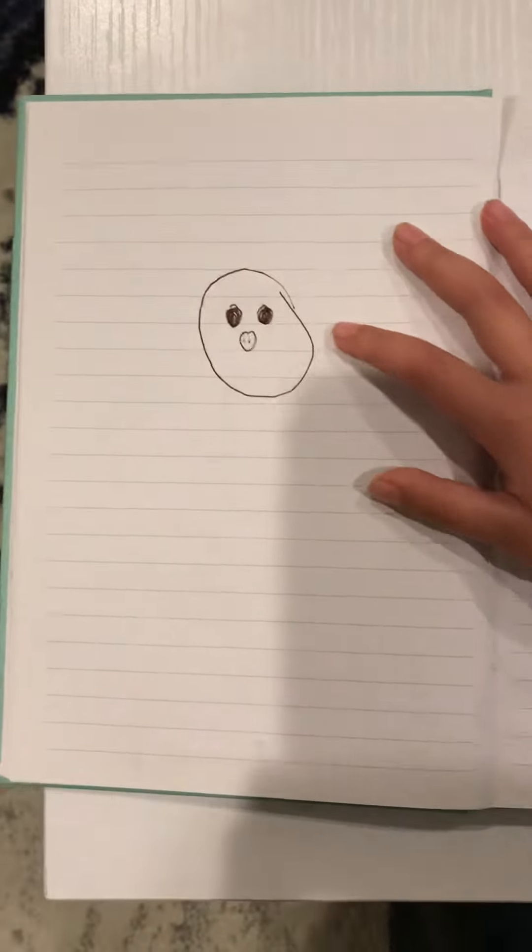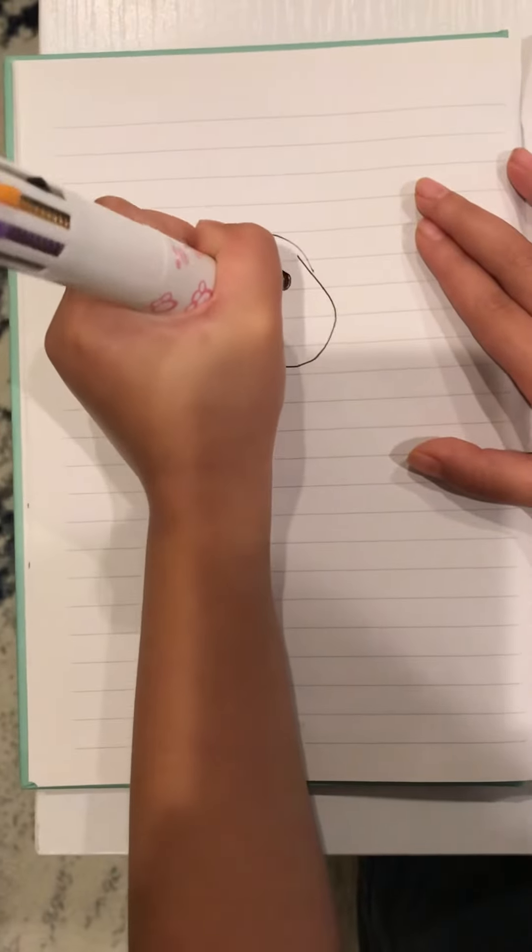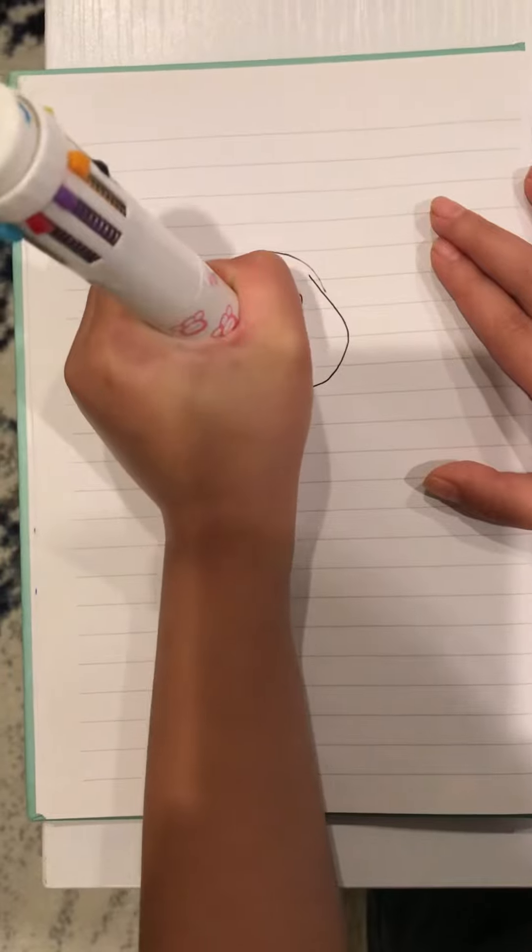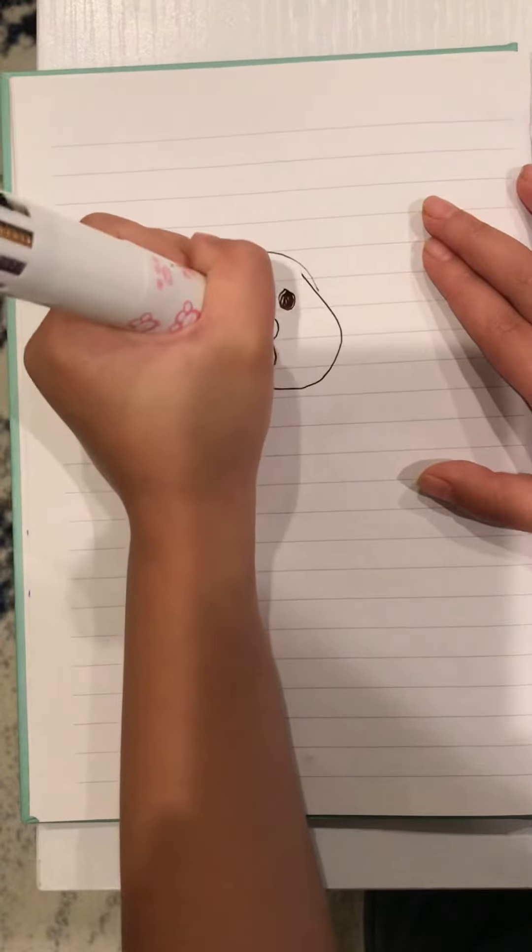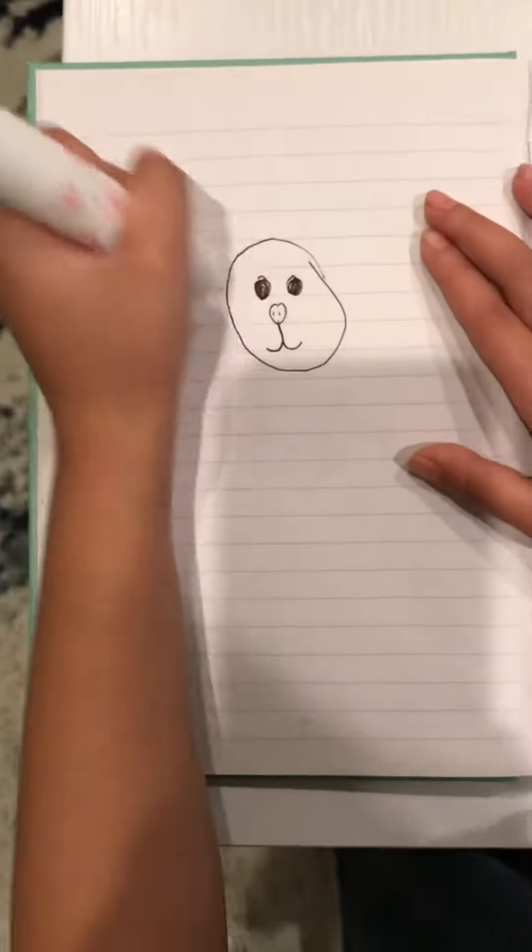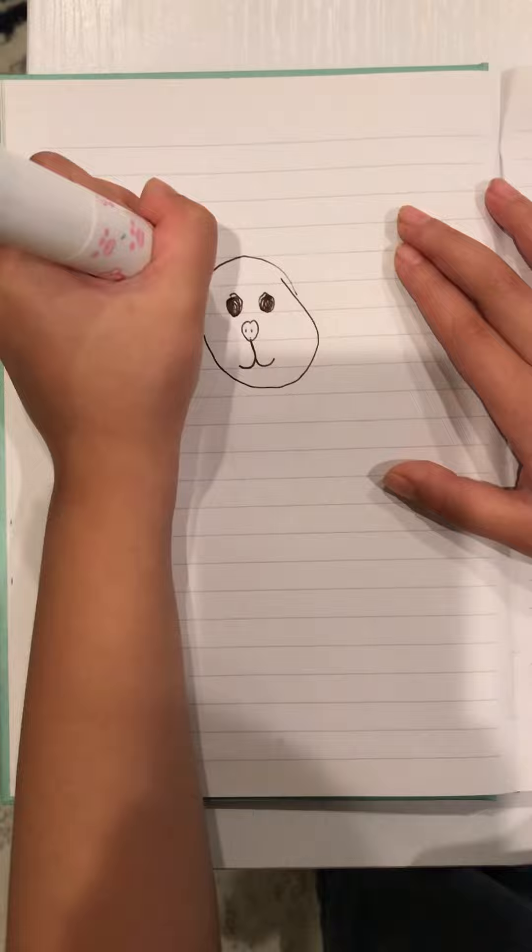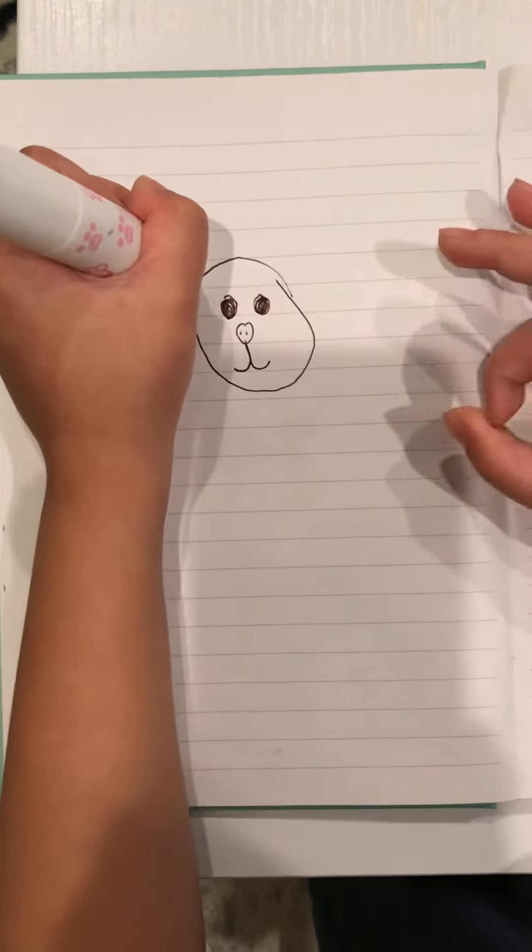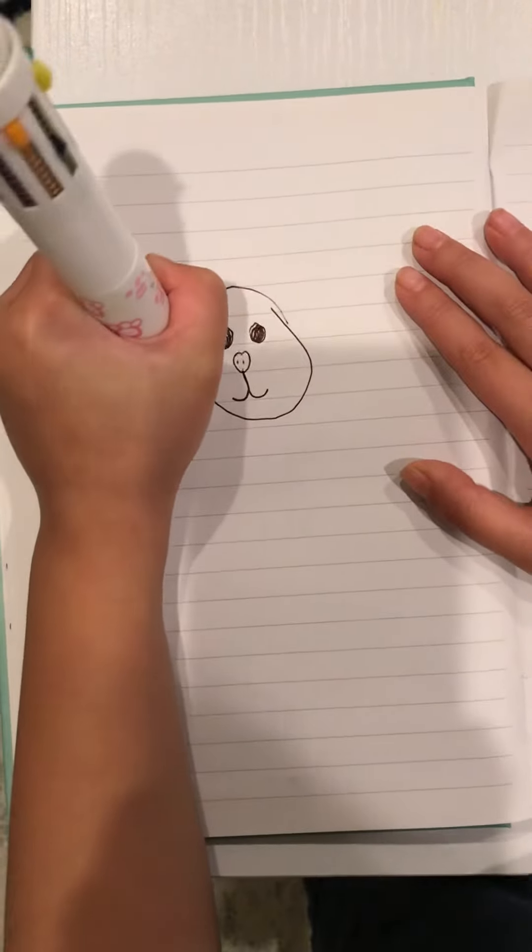So it becomes like this. And then draw two lines that come like this, but make sure it's curved. And the other one, like so it becomes like this. Then draw two ears and make two ovals attached to the head for the ears.